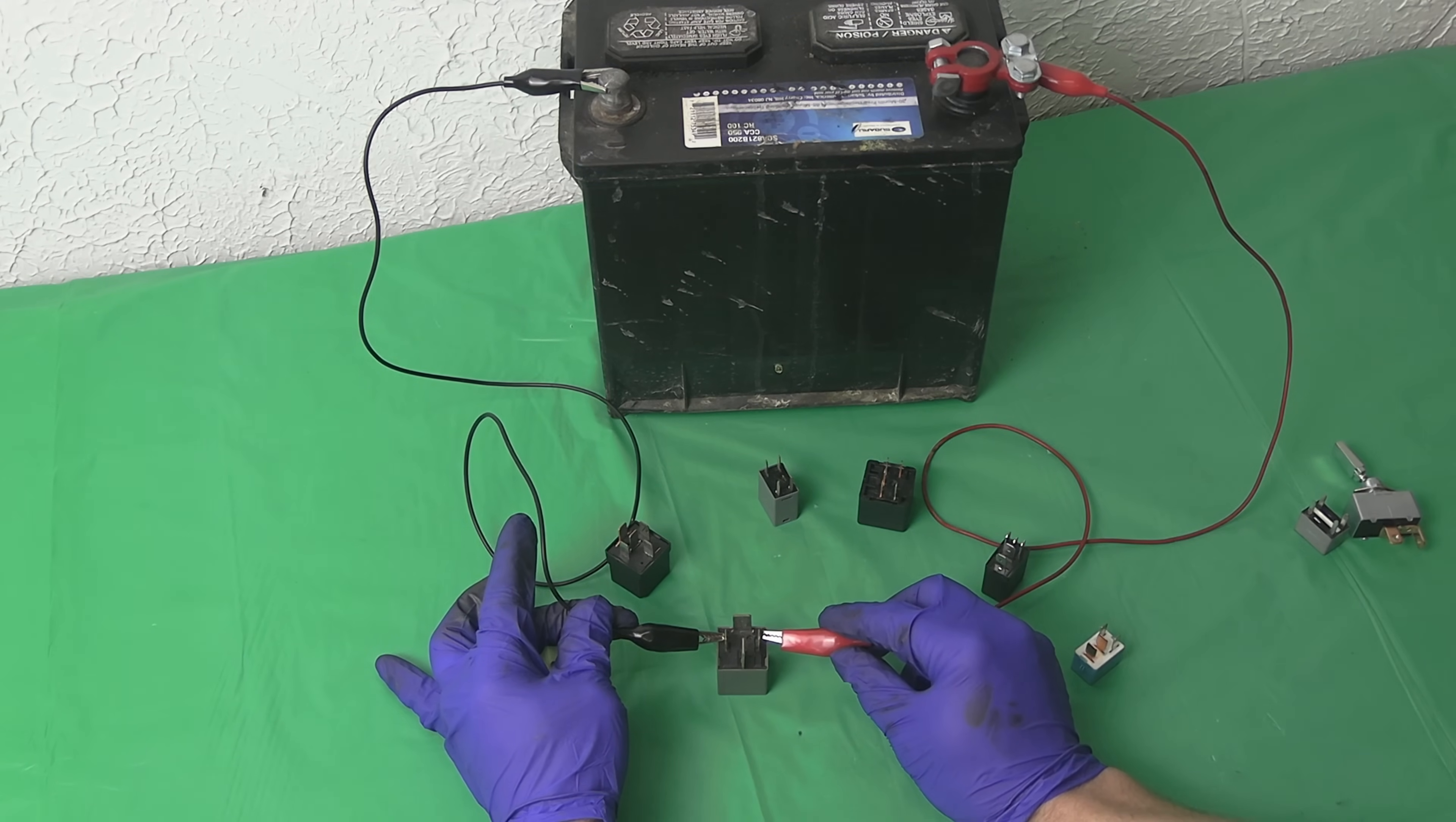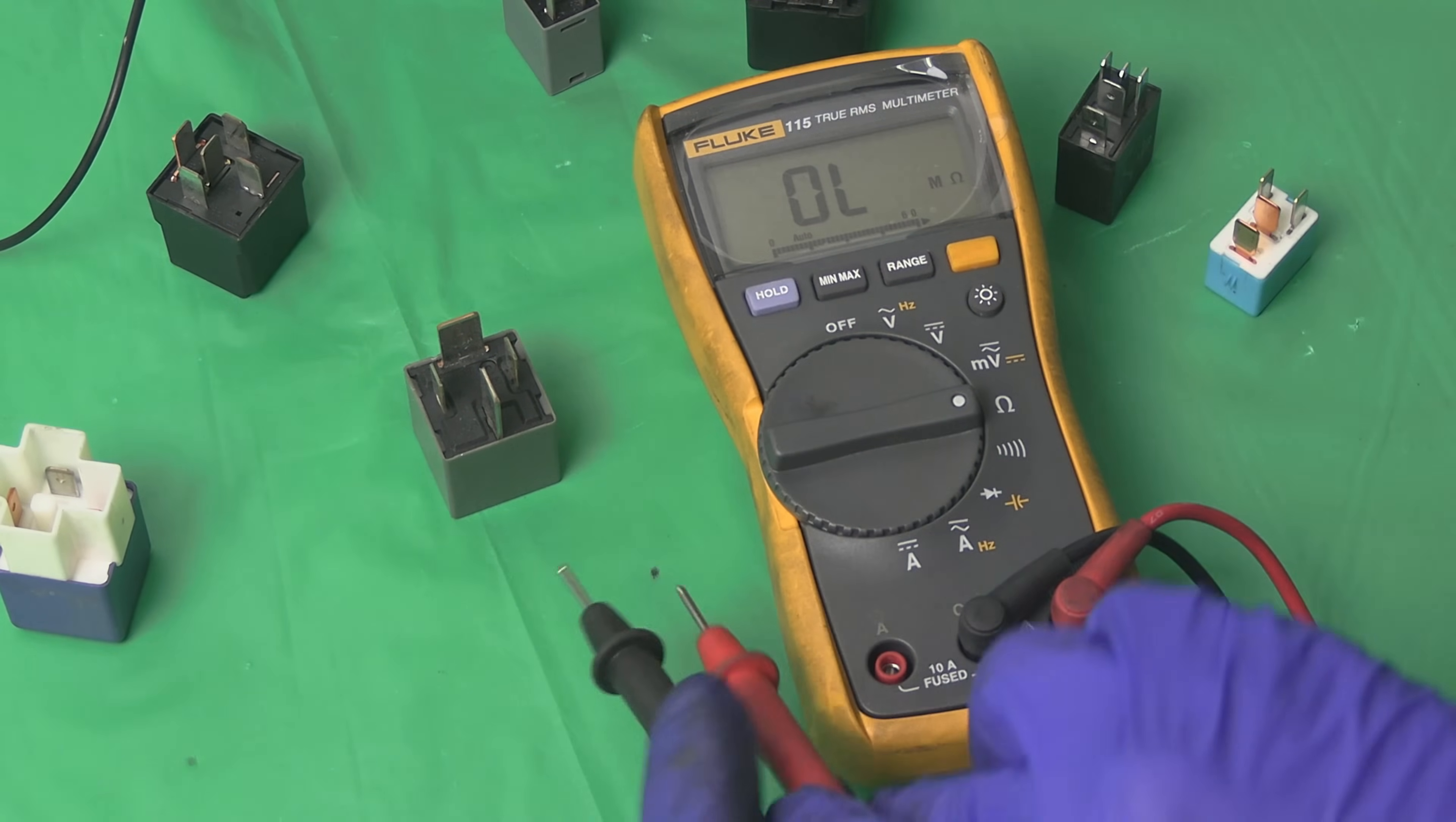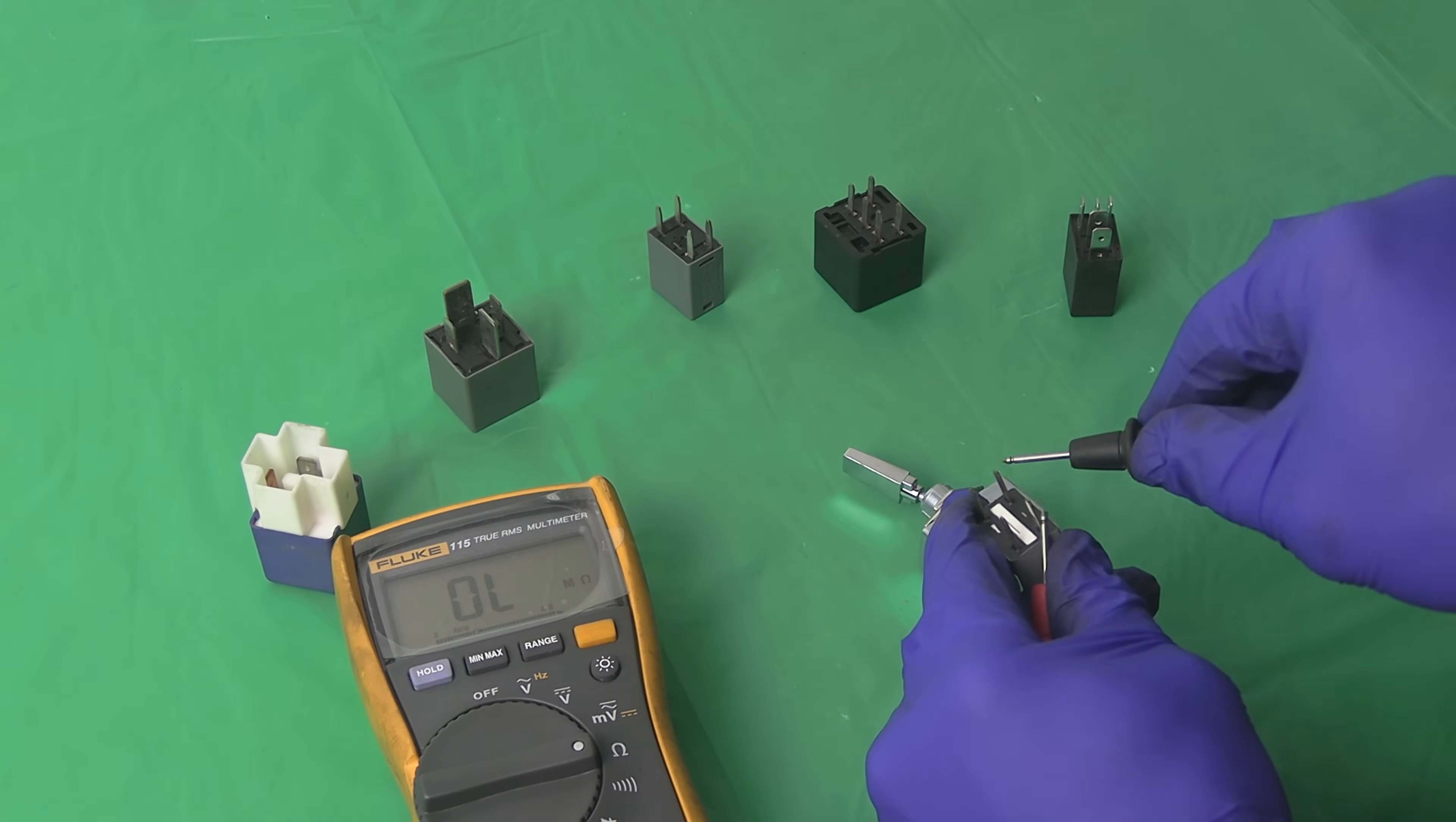If the relay does click, next thing you want to do is make sure the switch between pins 30 and 87 closes. When the relay is at rest, there should be no continuity between pins 30 and 87 because the switch is open. Let's energize the coil and see if it makes a difference. The switch should now be closed and we should see a very low resistance reading. You can also set your multimeter to continuity and listen for it to beep when it sees continuity. So if you see continuity where you shouldn't or you don't see continuity where you should, your relay is bad.